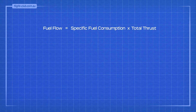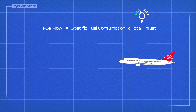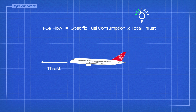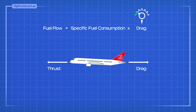Less fuel used for each unit of thrust is only part of the equation — the aim is to reduce total thrust as well. In level flight, the forward-facing force of thrust is balanced by the rearward-facing force of drag. In the fuel flow formula, thrust can be replaced by drag, since the value of drag is equal and opposite to the value of thrust.